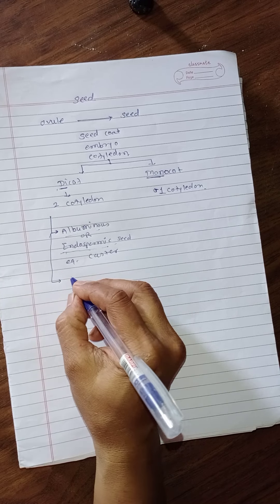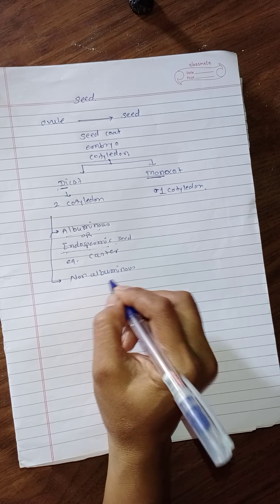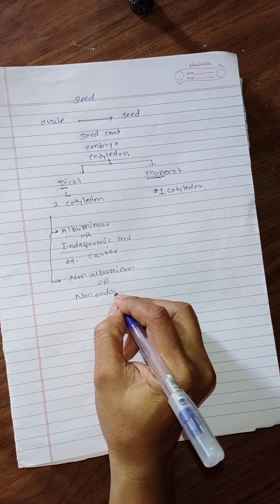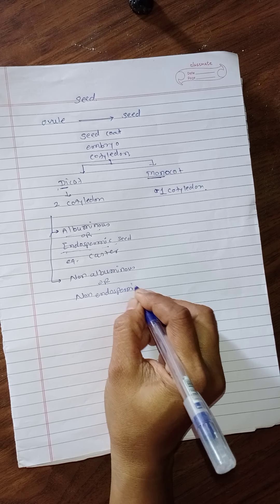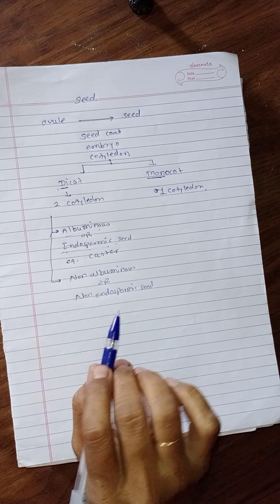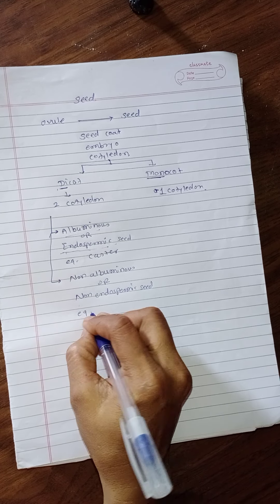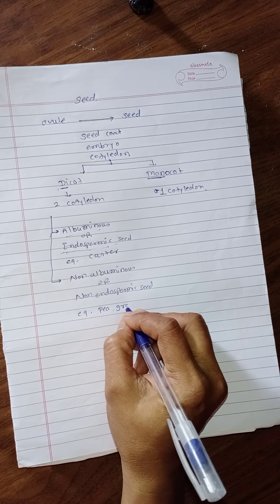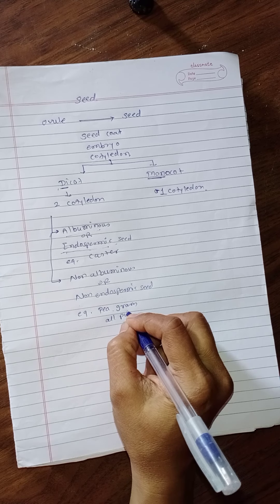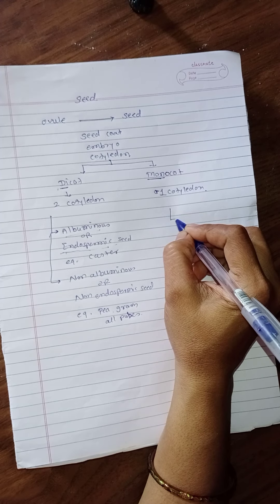The second type is non-albuminous, also known as non-endospermic seed. This means the endosperm is completely used up at the time of development. Examples are pea, gram, and all pulses. Monocot is again divided into the same types.